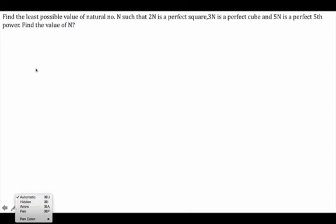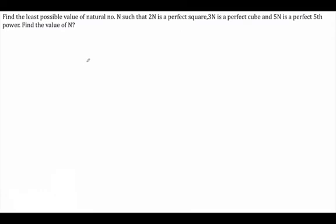Find a natural number n such that 2n is a perfect square, 3n is a perfect cube, and 5n is a perfect fifth power.